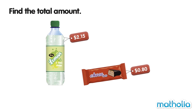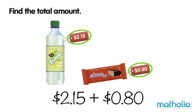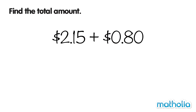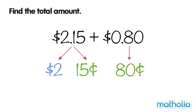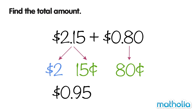The lemon drink costs $2.15. The chocolate bar costs $0.80. Let's add to find the total amount. Separate the amounts into dollars and cents. First, add the cents. $0.15 plus $0.80 equals $0.95.